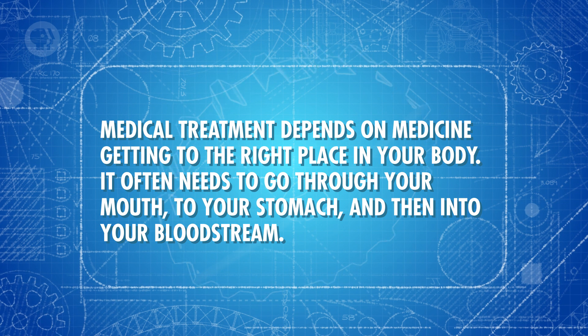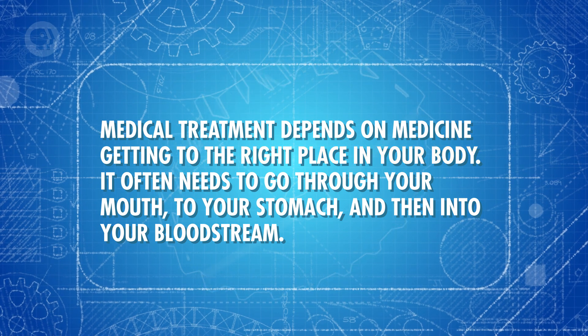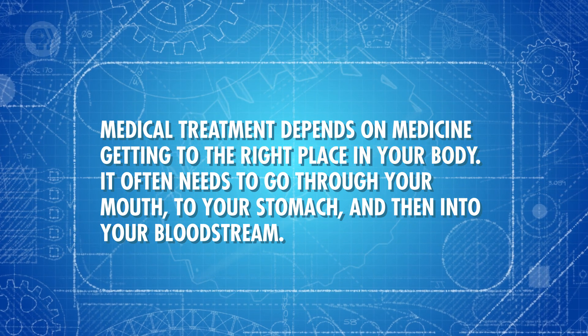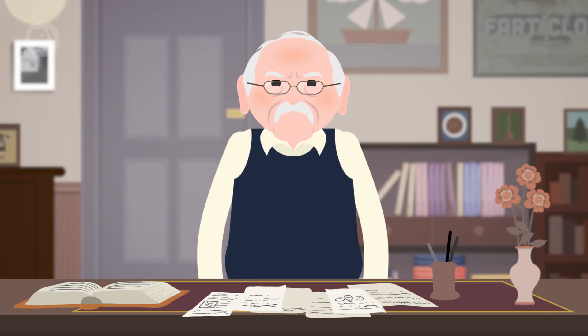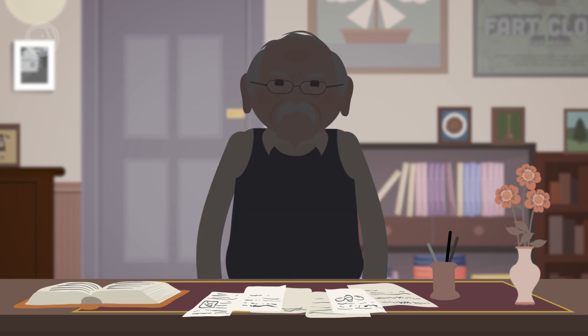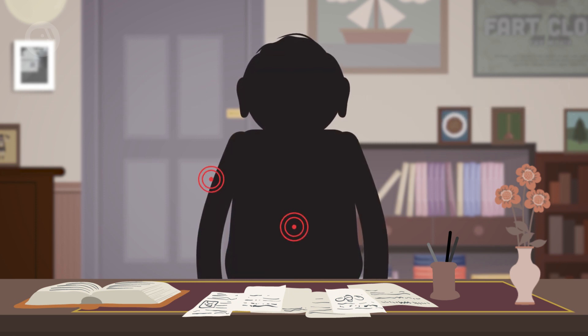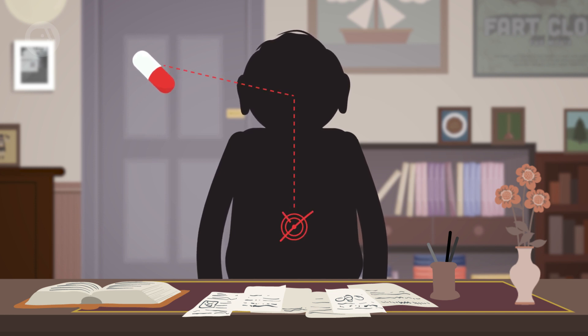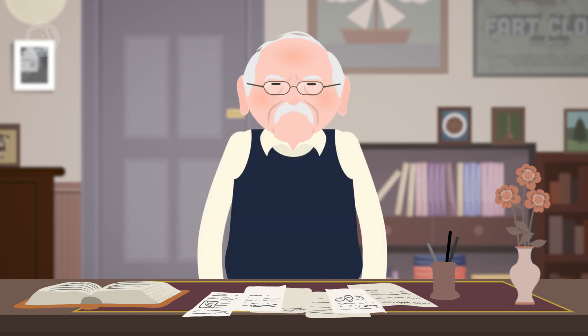Medical treatment depends on medicine getting to the right place in your body. It often needs to go through your mouth, to your stomach, and then into your bloodstream. Or maybe it needs to be injected into a certain location. But a drug might be less effective if it's not taken correctly. Sometimes it won't even work at all. For instance, people with type 1 and often type 2 diabetes have to take insulin by injection, in places like their arms or their stomachs. Just swallowing insulin in pill or liquid form wouldn't work because it would break down in the patient's stomach acid before it could do its job.